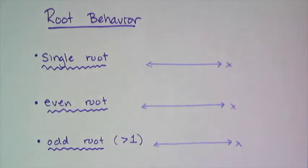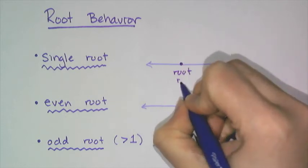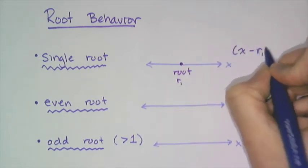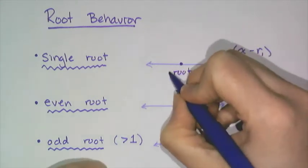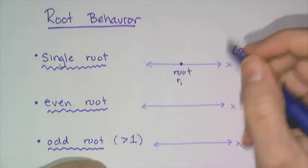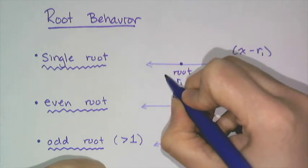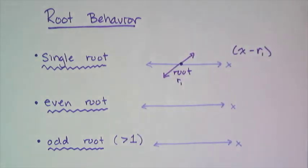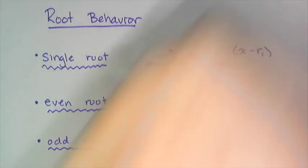If I have a single root — let's call it r1 — so my factor is x minus r1, it's linear, it's only to the first power. That graph is just going to cross through it, and it really has two ways of crossing through it. It's either going to cross increasing, or it's going to cross through decreasing.